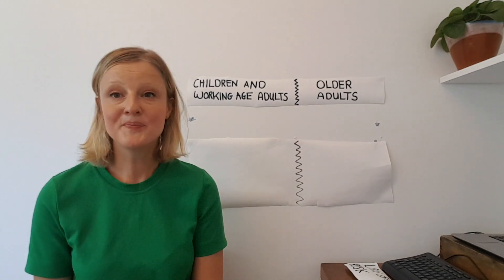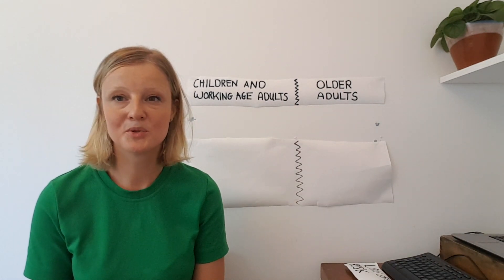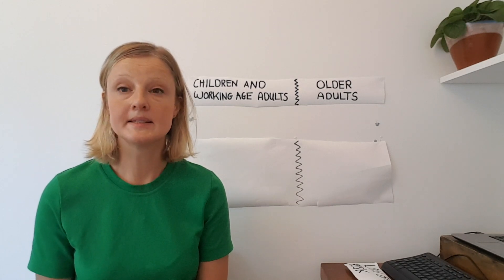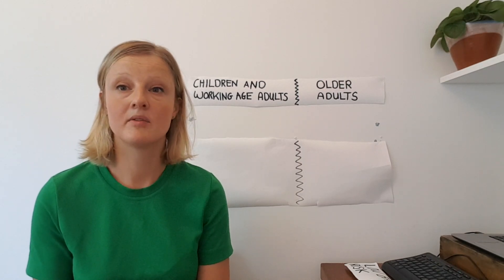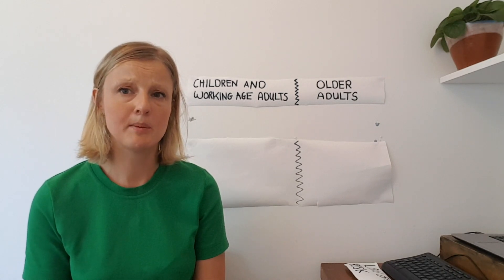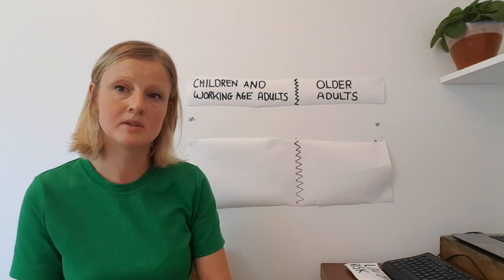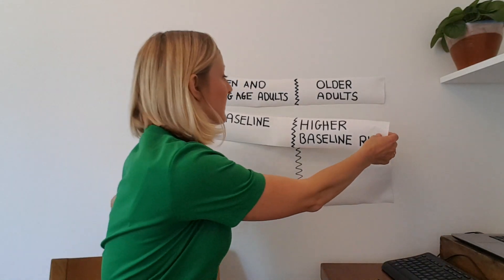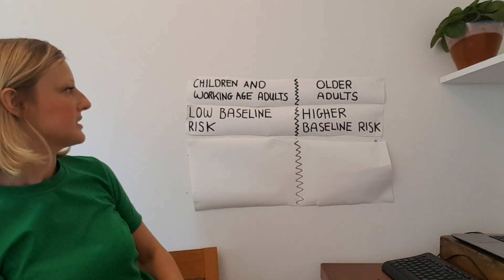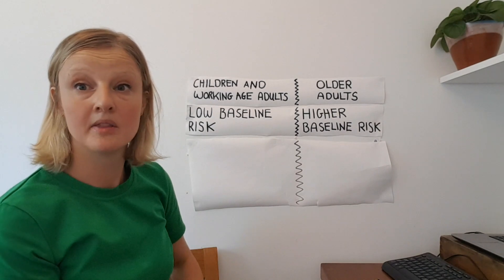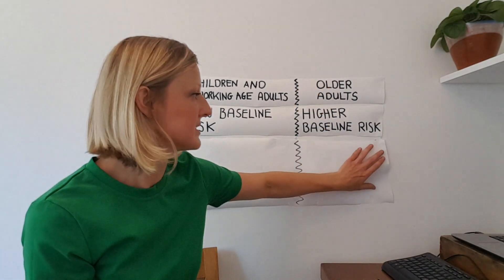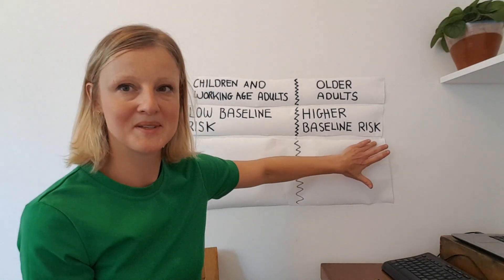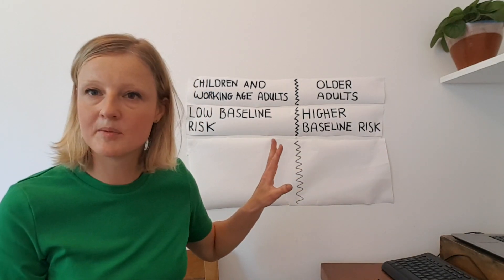First of all, I'm going to talk about age before I talk about diabetes. The reason I'm talking about age first is that we know from data from around the world that age is the strongest risk factor for death from the virus. Sadly, we know that the majority of people who have died have been older adults, particularly those aged over 80 years. Far fewer working-age adults have died, and hardly any children. This tells us that children and working-age adults have a low baseline risk of dying from the virus because of their age, while older adults have a higher risk.